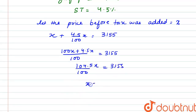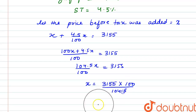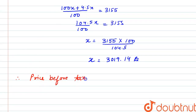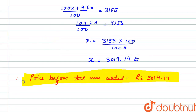So x's value is 3155 multiplied by 100, whole divided by 104.5. Therefore x equals Rs. 3019.14. So the price before tax was added is equal to Rs. 3019.14. That is our final answer. Thank you.